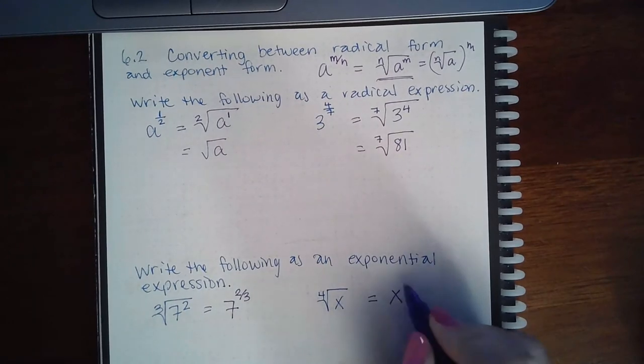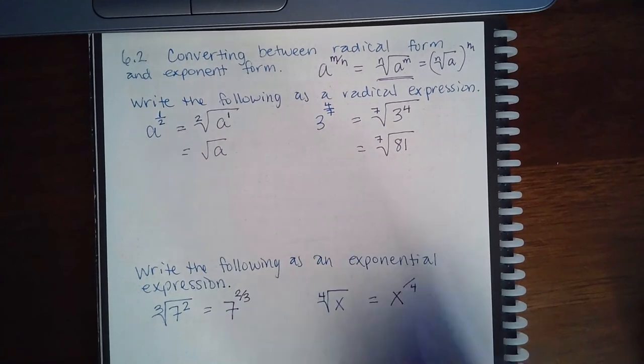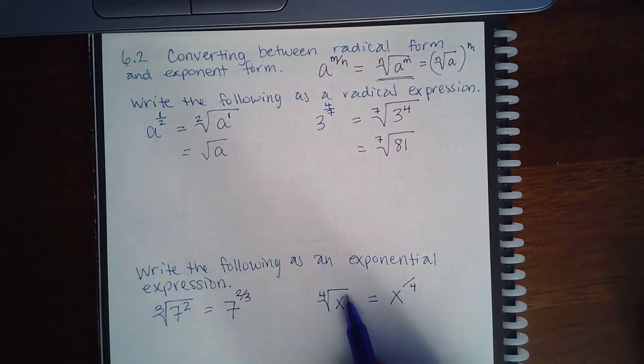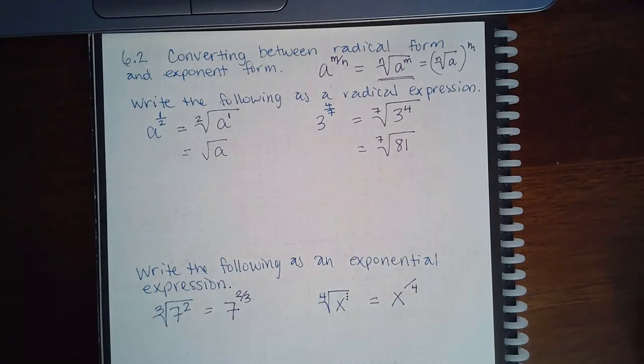Same thing here: keep the base, put the exponent in the numerator and the index in the denominator. But what is the exponent here? Remember, there is an invisible one there, so the exponent is a 1, so that numerator should have a 1 in it.